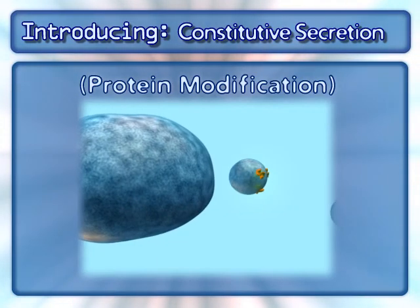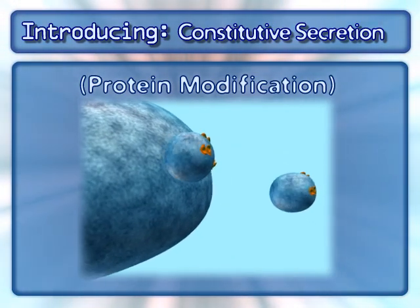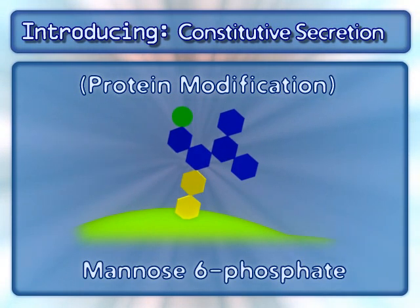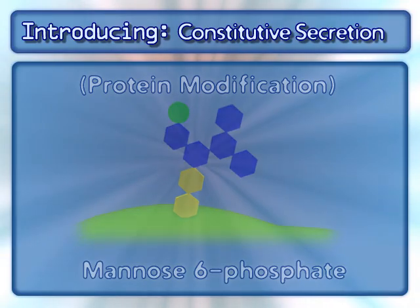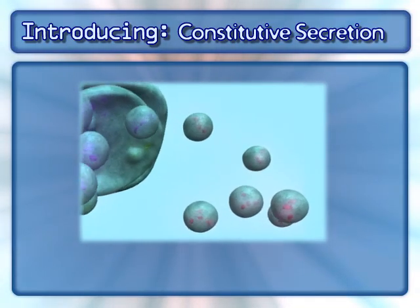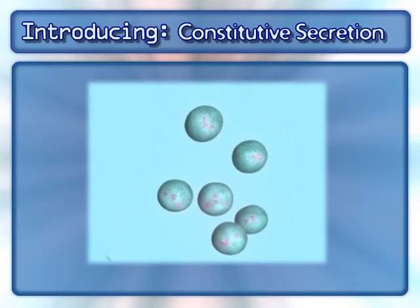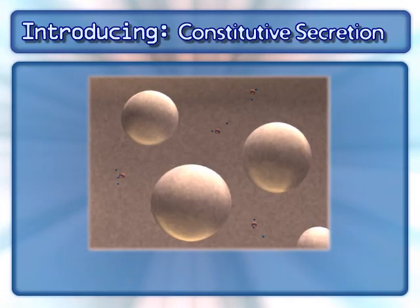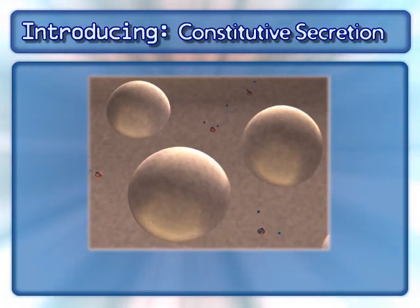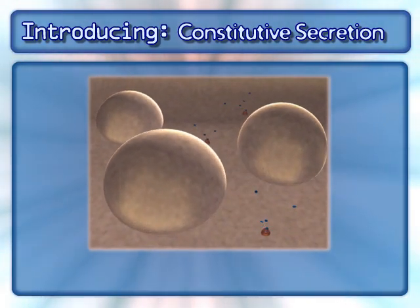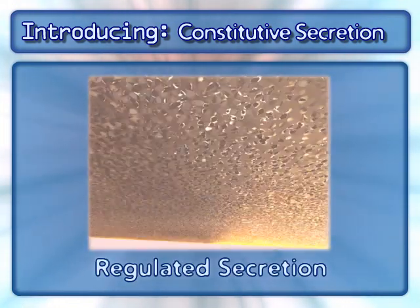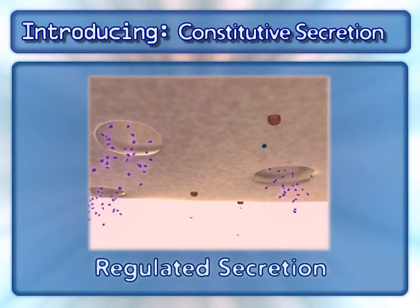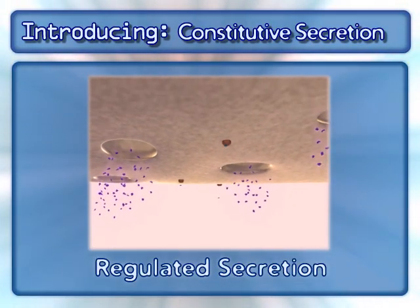As seen in the protein modification animation, some of these proteins can be destined for the endosome. They are targeted to the endosome by a specific mannose phosphate signal. Other proteins are destined for delivery outside of the cell. These proteins are packaged into secretory vesicles and delivered to the cell membrane. Some secretory vesicles congregate in the cell, awaiting an external signal. Once that signal is received, the vesicles rapidly fuse with the membrane and a large quantity of cargo proteins are released simultaneously. This is called regulated secretion.